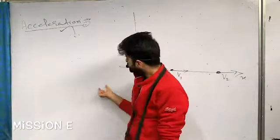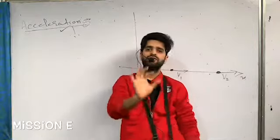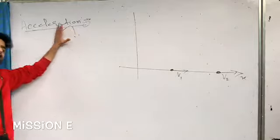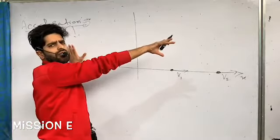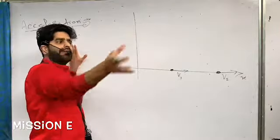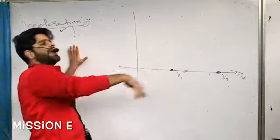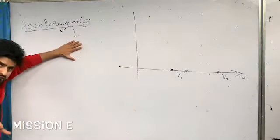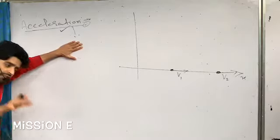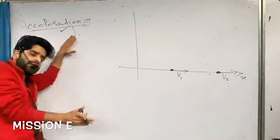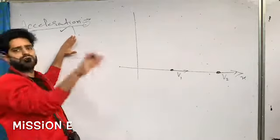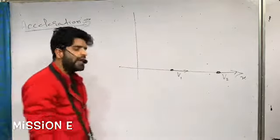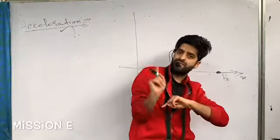Average acceleration: total change in velocity divided by the total time interval in which the velocity has changed. Instantaneous acceleration means the acceleration of a particle at a particular instant of time, and you find it by differentiating the velocity function with respect to time.